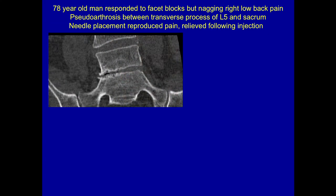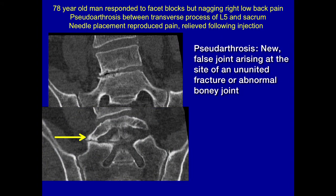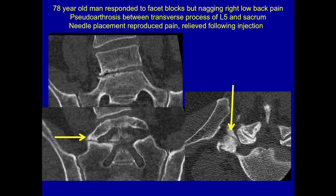Here's one last case: a man with terrible back pain who had facet injections and did pretty well, but still had recurrent right-sided pain. I noticed he had a pseudoarthrosis between the transverse process of L5 and the sacrum — we see this not uncommonly in low back pain patients. You can see he has a little scoliosis. I said, 'Come back and we'll put a needle down there just to see,' as there was sclerosis present.